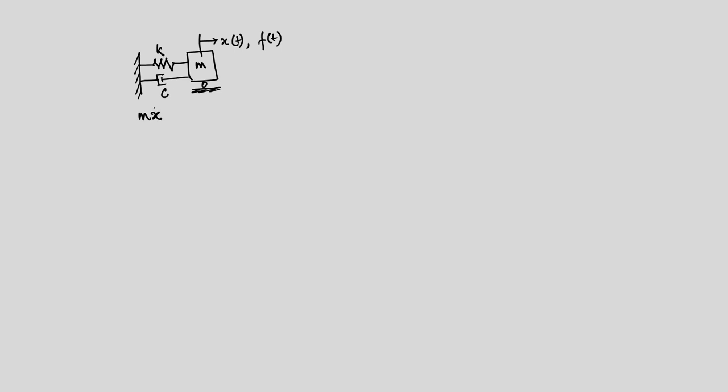We have a mass-spring-dashpot system where a spring is connected to a mass and we have a damper. M, K, and C are the components of this SDOF system with one degree of freedom, x(t). We also have a forcing function f(t), and the equation of motion is M x-double-dot plus C x-dot plus K x equals F0 sin(λt) as the forcing function.